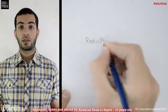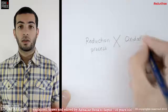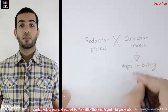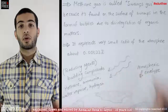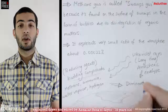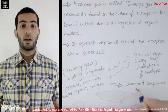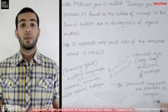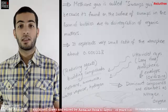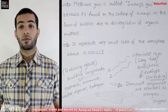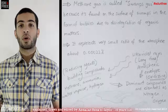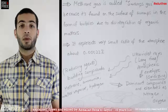The reduction process is the opposite of the oxidation process that helps in burning. Due to the exposure of these gases for a very long time to ultraviolet rays, this led to the domination of other compounds like nitrogen and oxygen. Instead of being a reducing agent, the atmospheric envelope turned into an oxidizing agent due to the dominant presence of nitrogen and oxygen, which helped in the beginning of burning processes.